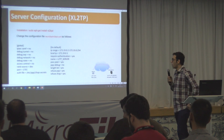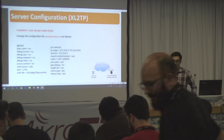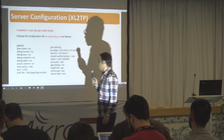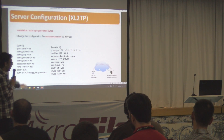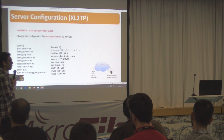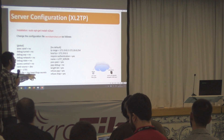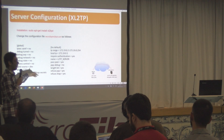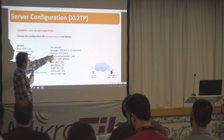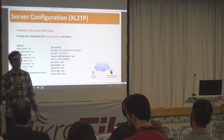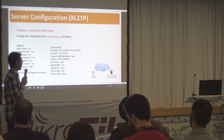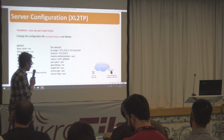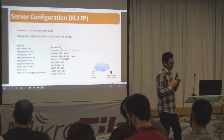This is the configuration for XL2TP. The more important options are: the port, which is the default for L2TP; the authentication file, where you provide the username and password; the IP range that the L2TP server gives to clients; and the local IP which will be given to the server itself.